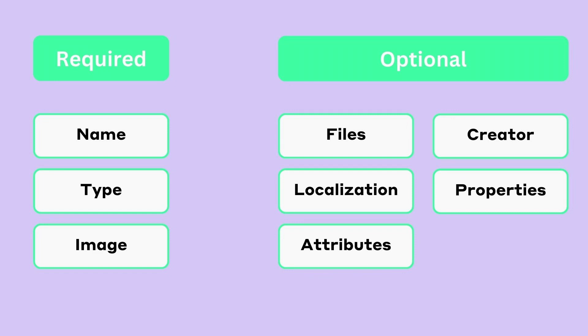Next, the attributes field is used to store information about the traits and their values. This comes in handy to calculate the rarity of each NFT in an NFT collection. Attributes are mostly used for collectable NFTs. And finally, the description field is used to store any kind of information that describes your NFT collection.